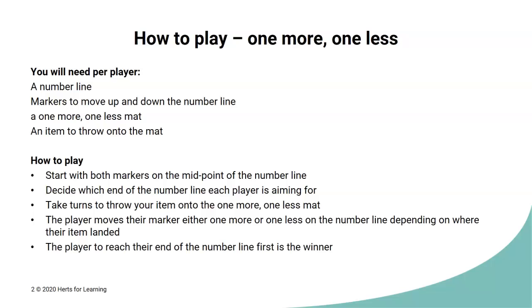Here's a reminder of how to play one more, one less. So you'll need your number line. In the game you've just seen, our number line was 10 to 20, but you could have a number line 0 to 10 if you wanted to, or we've got some other alternatives later on in the video. You need your markers to move up and down the number line. You need your one more, one less mat. Now, as I said in the video, it's quite good if you do this outside and draw it out onto the pavement or onto your patio, and then you've got a bigger area for you to throw your item onto your mat. Or you can do it on a piece of paper like we did and throw a small object onto it. When you're playing the game, remember you start with both the counters at the midpoint of the number line. And you decide which end you're heading for. You take turns to throw your item and you follow the instructions of what you land on. The player who reaches their end of the number line first is the winner.